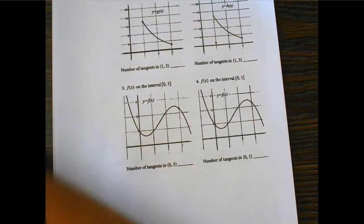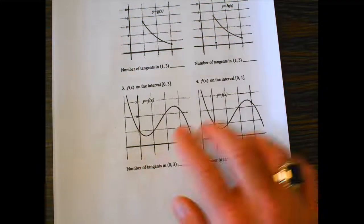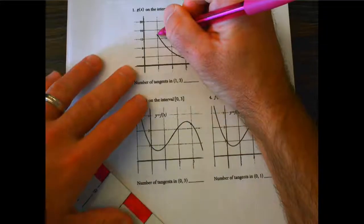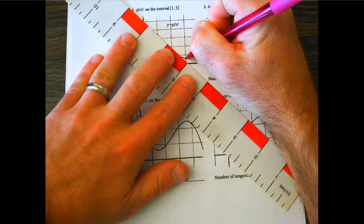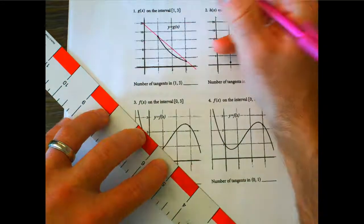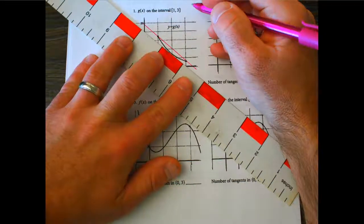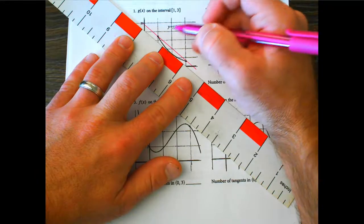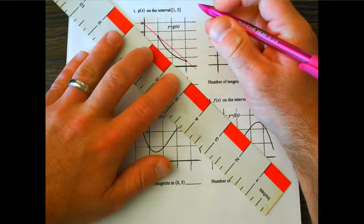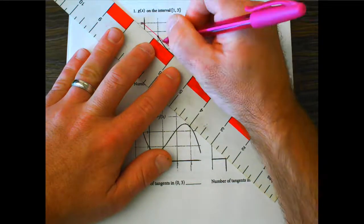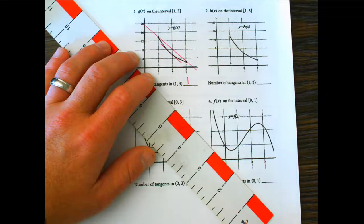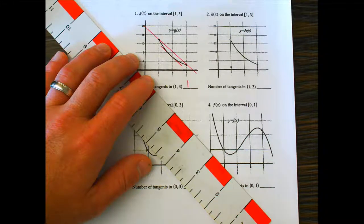On number one, connecting one to three, I'm counting how many tangents are parallel to that secant. It looks like there's only one point of tangency, so I'll say one. On my answer key when you come back, you'll see all of the tangent lines drawn in.